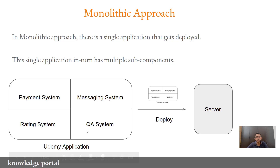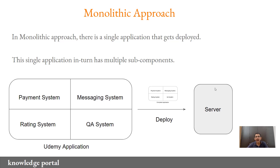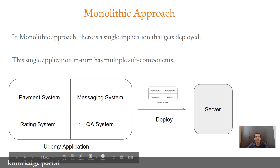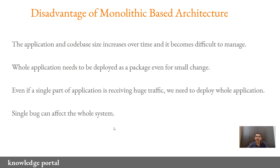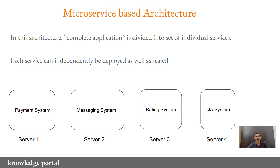For example, let's assume that users are using the question and answer system very extensively within the Udemy application and due to that the server is slowing down. Since the entire application is deployed on the server, even if the load is coming into one of the subcomponents, if you decide to add more servers to handle the load, you will have to deploy the entire application on those additional servers. There is no way to deploy only the QA system — which is getting the higher load — in a monolithic based architecture. And the fourth disadvantage we've already discussed: a single bug can affect the whole system. These are some of the reasons why organizations are moving from a monolithic based approach to a microservice based architecture.